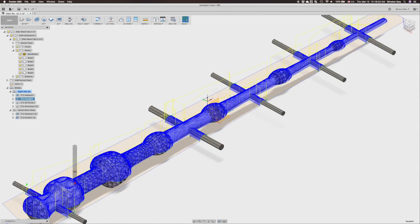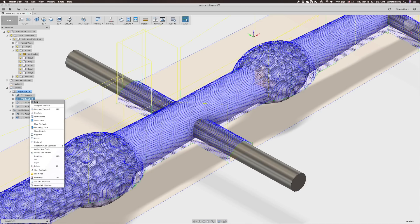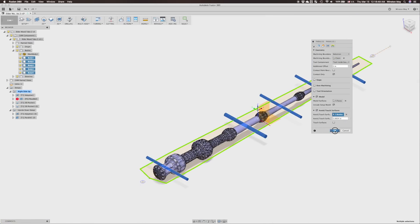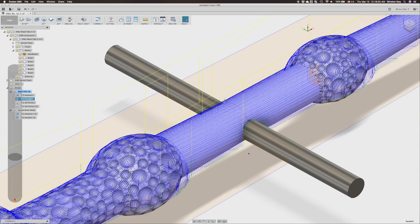For my parallel toolpath, what I forgot to do during Monday's livestream was to add an avoid touch constraint to my tabs. This would save me about a minute of machining time since the bridges holding my wand in place don't need to be finished.